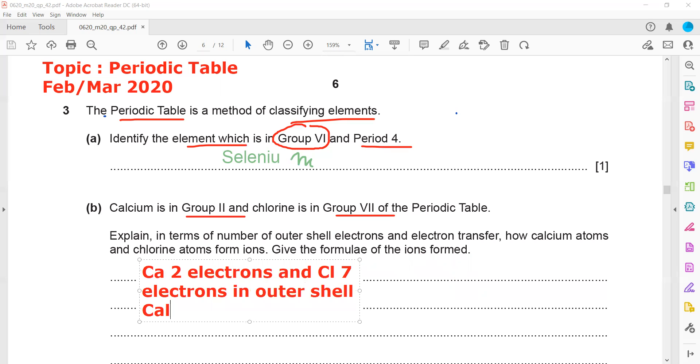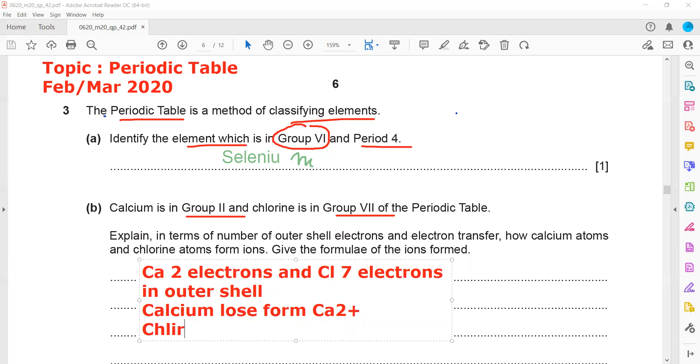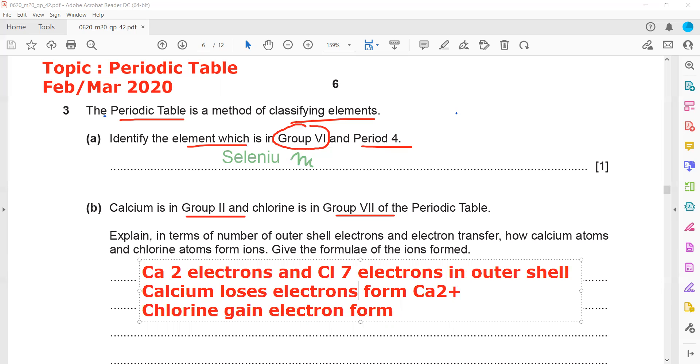Calcium lose and it will form calcium 2 plus where chlorine gain 1, each chlorine gain electron. And as a result, it will form chloride ion. This is what happened in a formation of a calcium chloride.